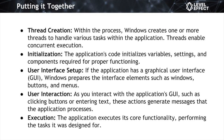Next, thread creation: once the process is established and memory allocation and DLLs have been loaded, the operating system generates individual threads within that process. These threads allow different tasks within the application to run concurrently. Then comes the initialization stage, where the application's code initializes various elements including variables, settings, and components necessary for the application to run properly, preparing it for its intended functionality. Finally, user interface setup — this is actually when you'll start to see the application load. If the application features a GUI like Chrome, the operating system sets up interface components such as windows, buttons, menus, and other graphical elements you can interact with.